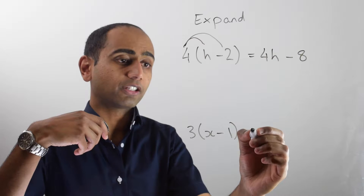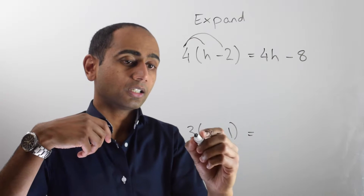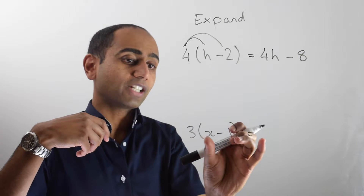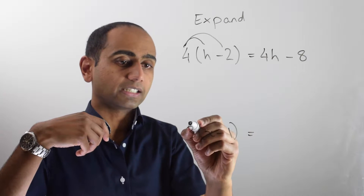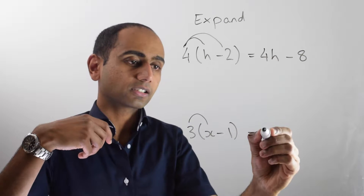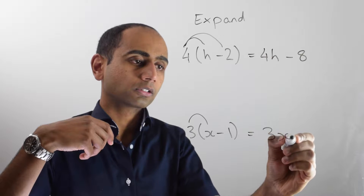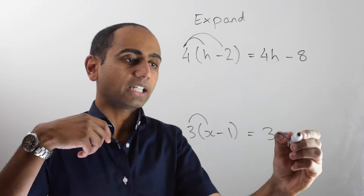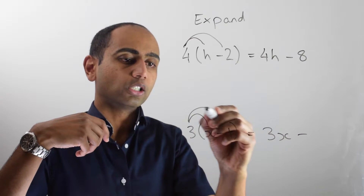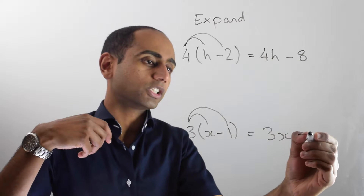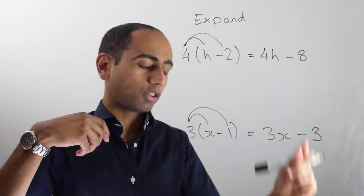Using the same method here, three lots of x minus one is three x, take away three lots of one, which is three.